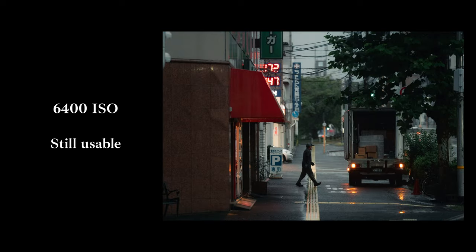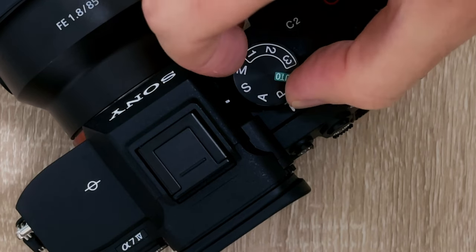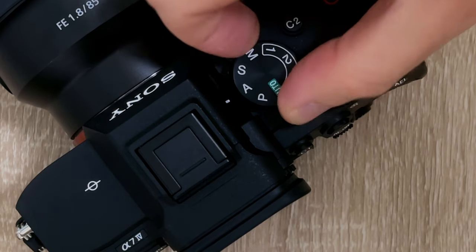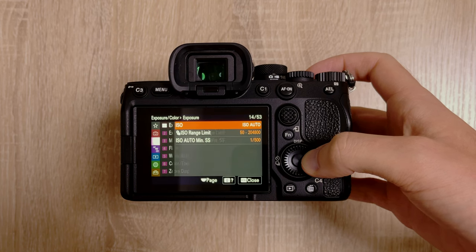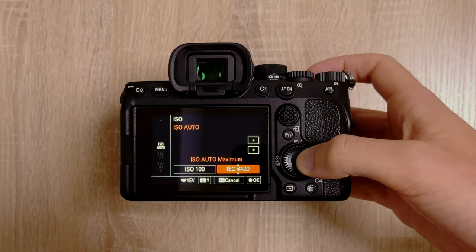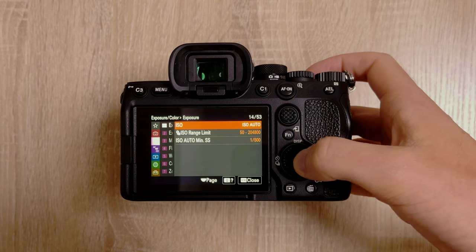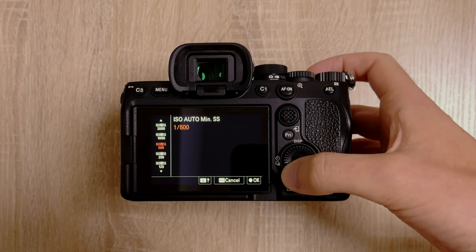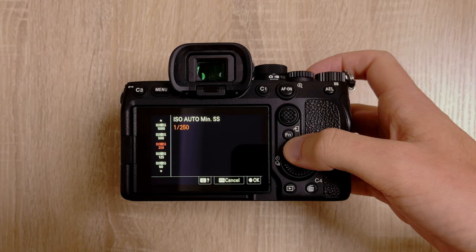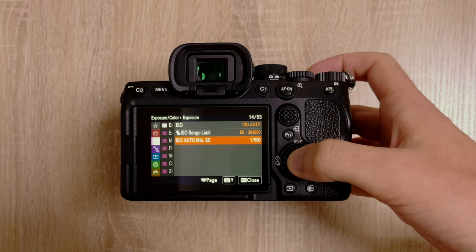That said, I most of the time use aperture priority mode on my camera when shooting in the streets, in combination with auto ISO up to 6400. I then set my minimum shutter speed depending on the lens I'm using, but most of the time I set it around 1/250, or even 1/500 if I'm using a really long lens.